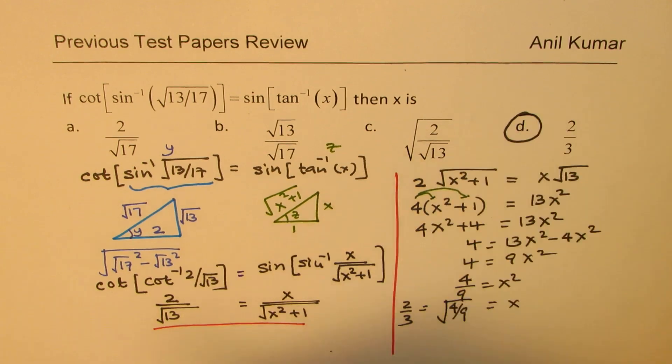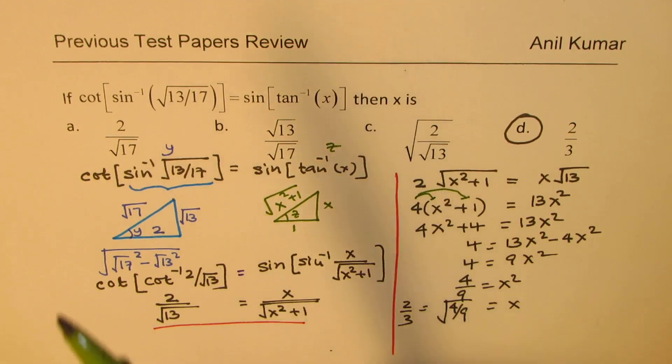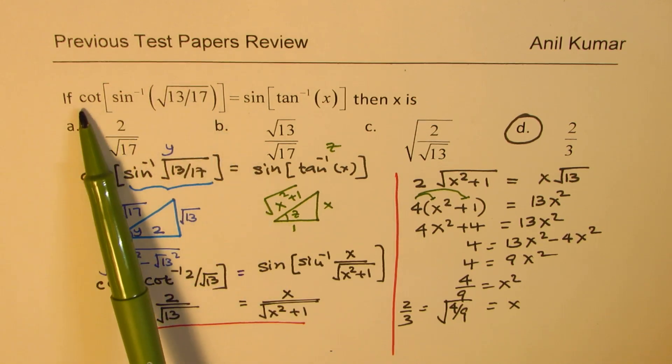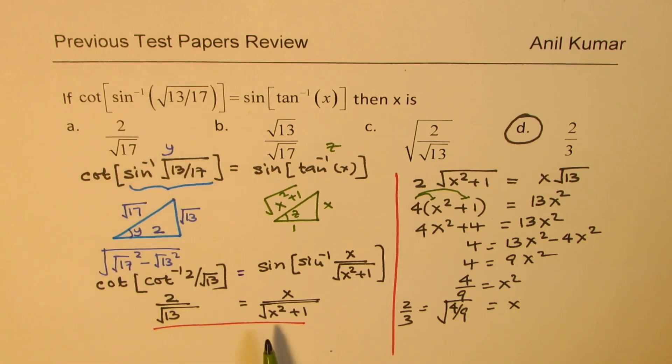Option D is the right option for you. Perfect. That is how you should be solving such questions. Once again, the idea here is to start from inside function, make your triangle, write it as inverse of whatever is outside, and then it is easier for you to simplify. This is like solving a rational equation. I hope that makes sense. Feel free to write comments and share your views. If you like and subscribe to my videos, that'd be great. Thanks for watching and all the best.